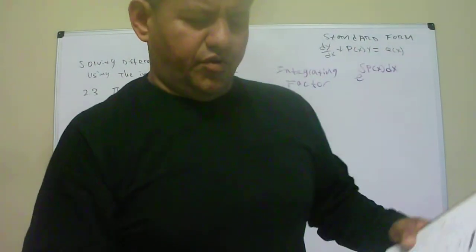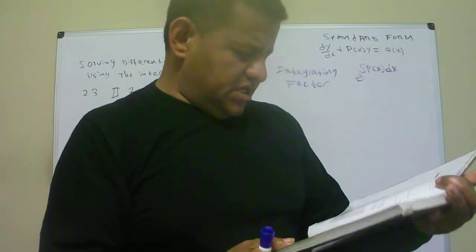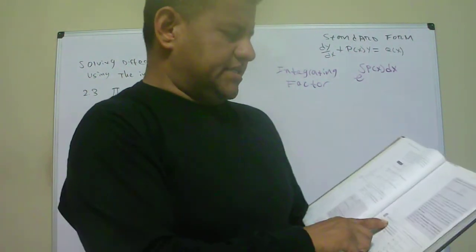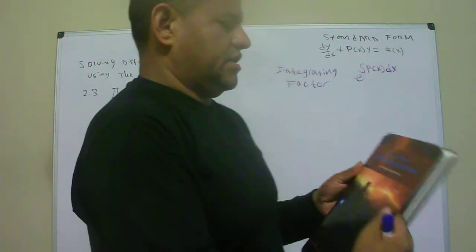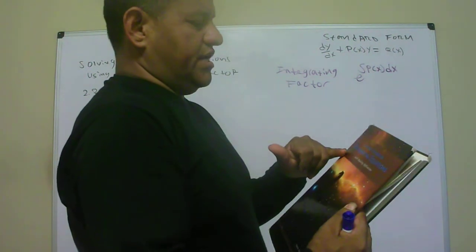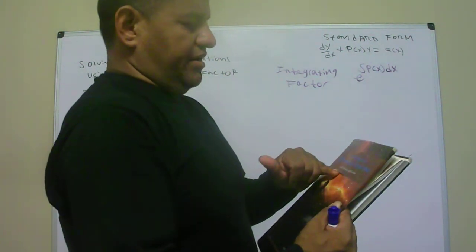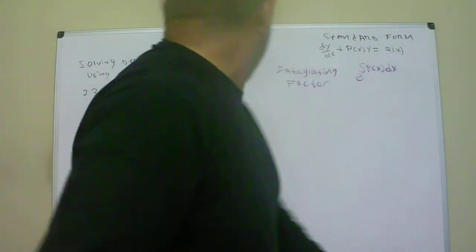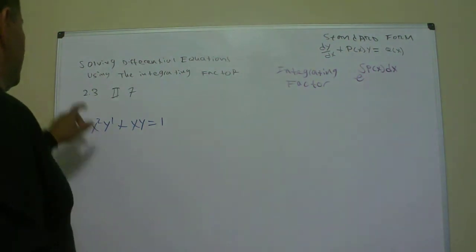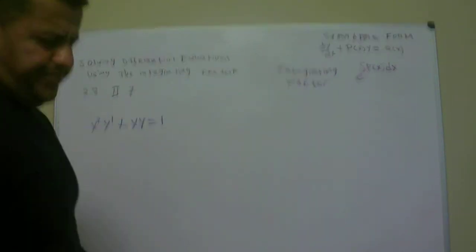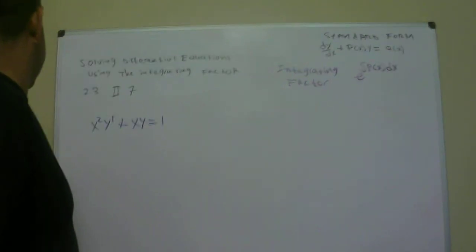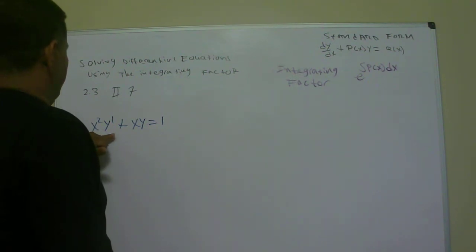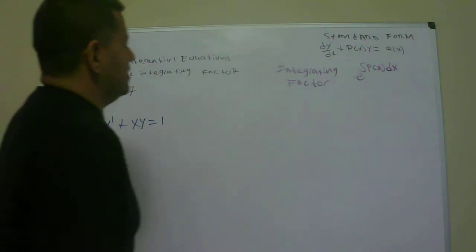Hey everybody, today I'm doing another differential equation problem. This time we're doing number seven on exercise 2.3 in 'A First Course in Differential Equations with Modeling Applications' by Dennis Zill. The differential equation is x squared y prime plus xy equals one.